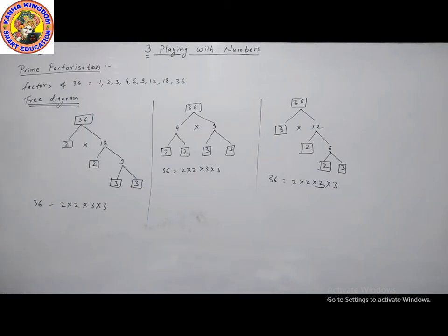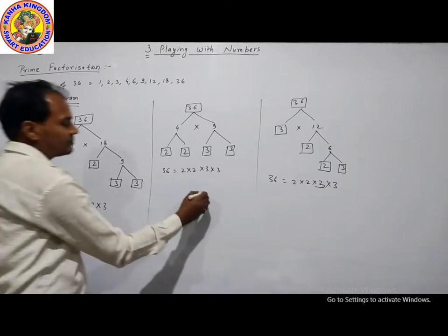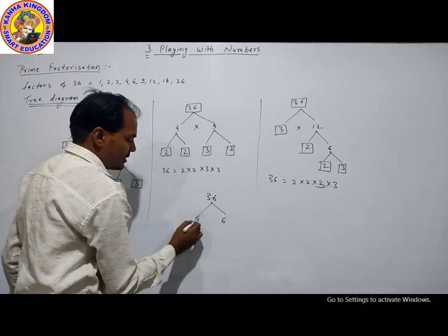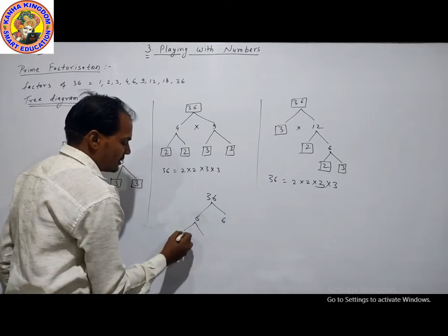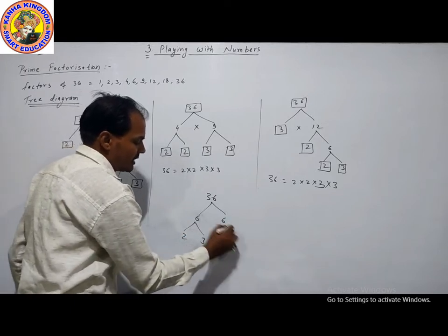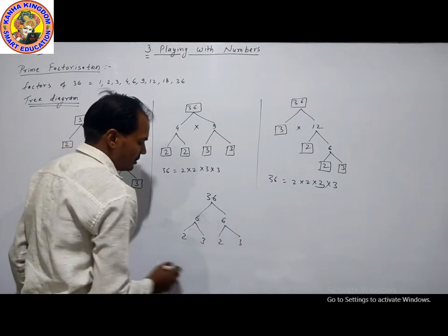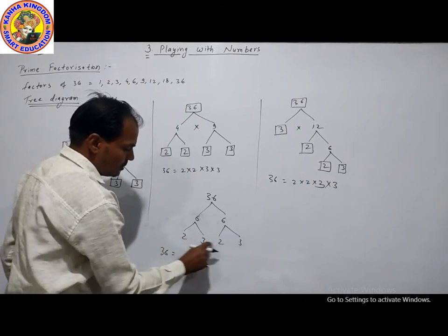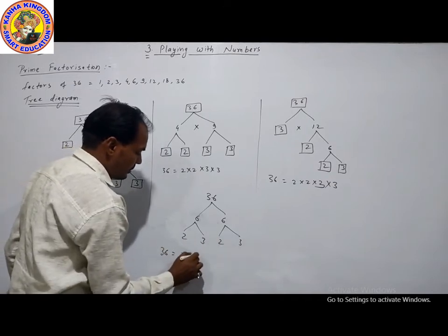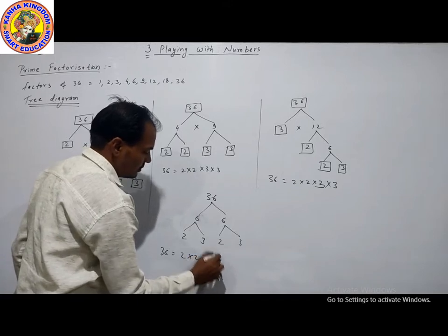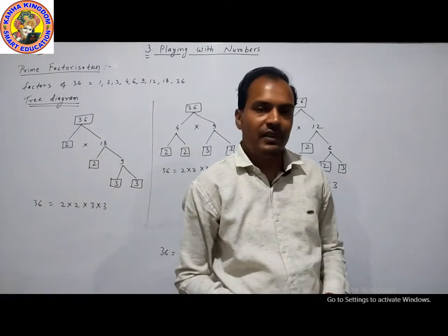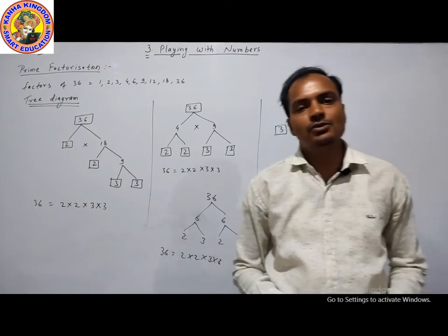We can also start with 6 into 6 for 36. Each 6 breaks into 2 into 3, giving 2 into 3 into 2 into 3, which equals 2 into 2 into 3 into 3. These are the prime factorizations. You can take a screenshot of this.